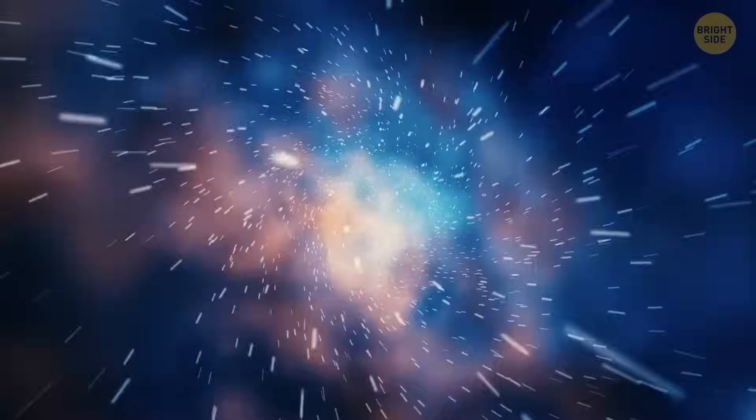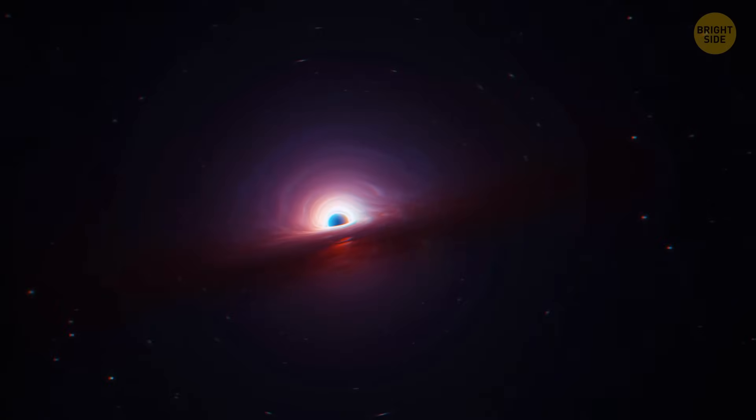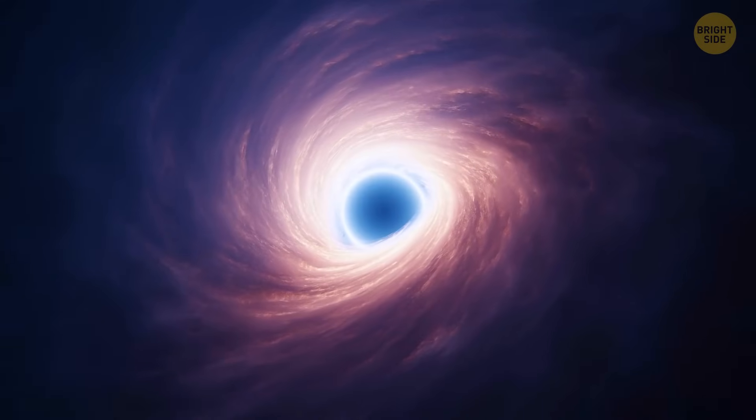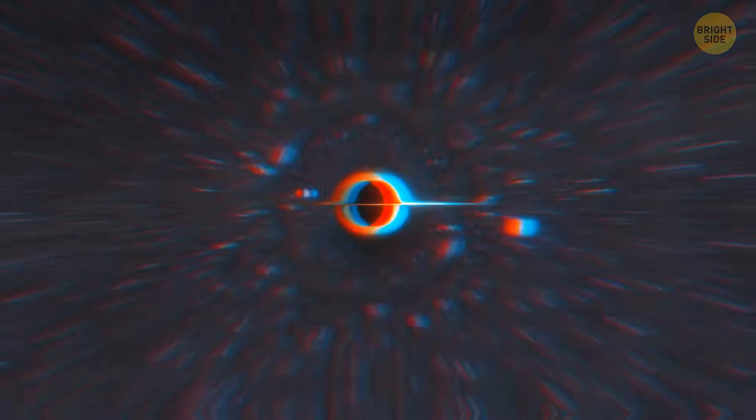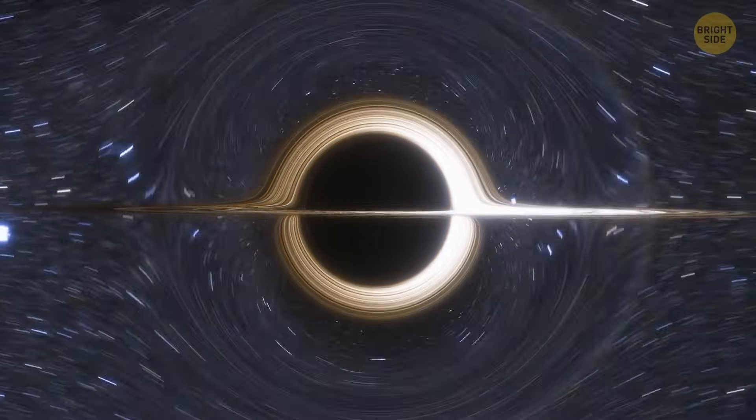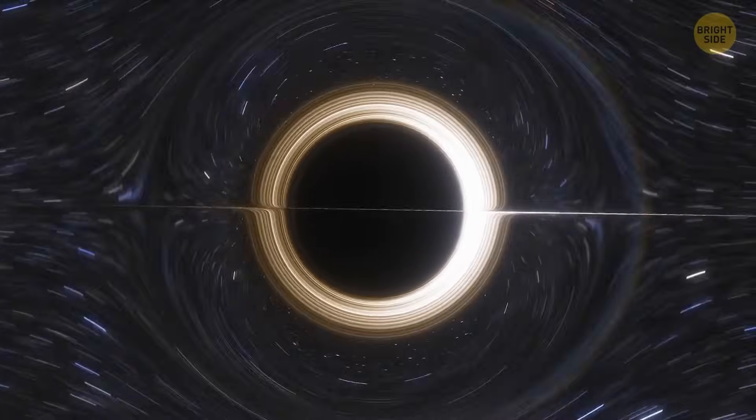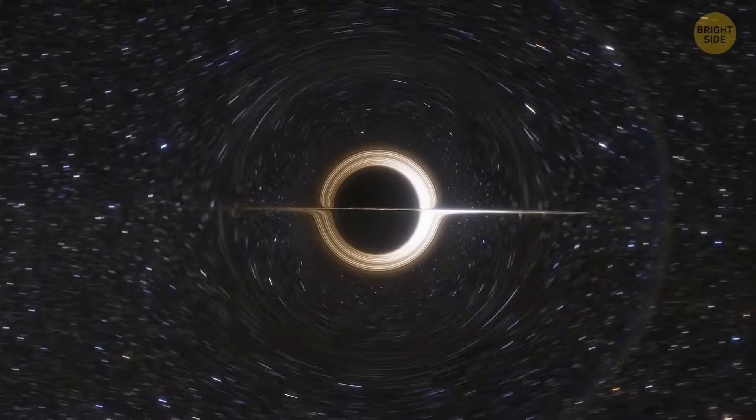This point is surrounded by an event horizon, the invisible line beyond which nothing, including light, can escape. And just like that, voila! A stellar black hole is born. Pretty mind-blowing, isn't it? Stellar black holes are the most common type of black holes we know of. These guys can be found all across our galaxy.